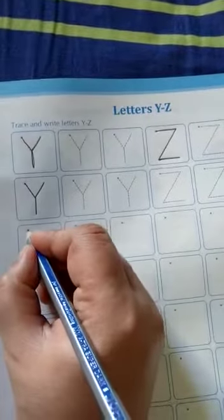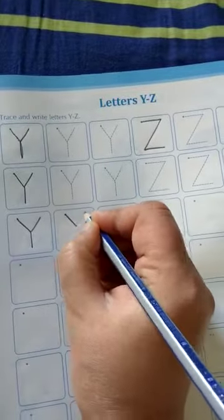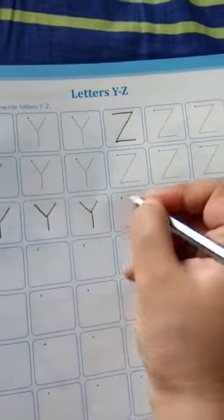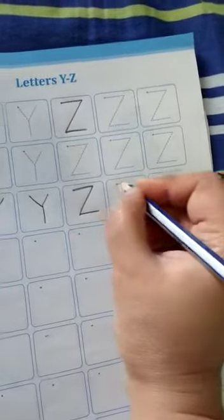So how to write? Let's repeat once. Y, and for Z: one slanting line, then the slanting line, and then the slanting line.